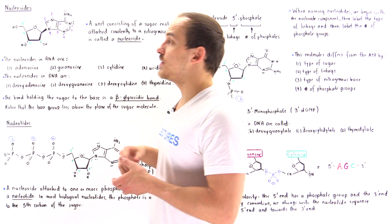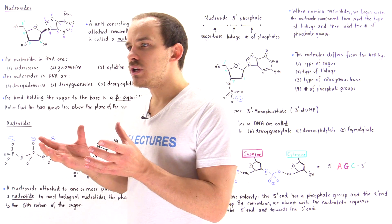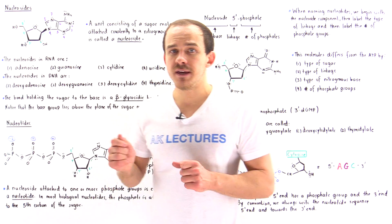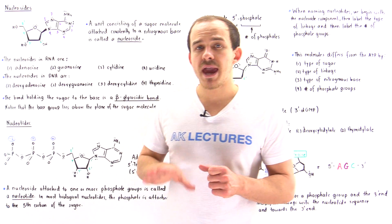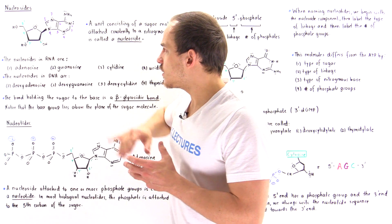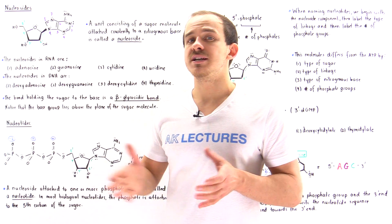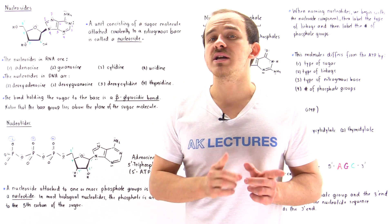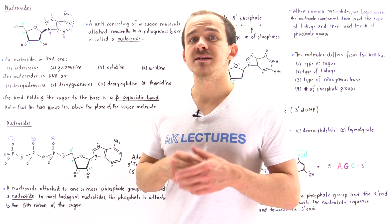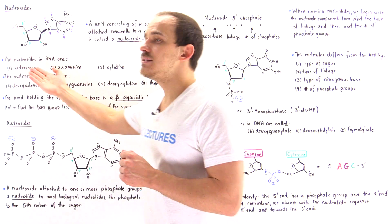Let's begin by describing nucleosides. All a nucleoside is, is a molecule that consists of a sugar molecule attached covalently via a beta-glycosidic bond to a base. This is one example of a nucleoside. In this particular nucleoside, the sugar is a ribosugar, and that means this nucleoside will be found on the RNA molecule. The base in this particular case is adenine, and the way that we name this nucleoside is simply adenosine.